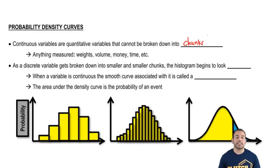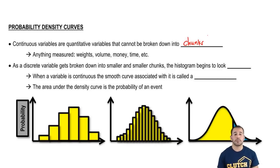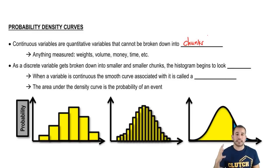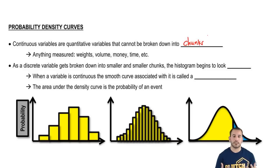Now, continuous random variables — you can't have these smaller discrete chunks, so we have anything that's measured. Weights, for example — even though you may weigh 120 pounds, if you want to get very exact, you could be weighing 120.2795 pounds. Same thing with volume, ounces, money, time — anything that can be broken down into an infinite amount of discrete chunks within an interval. That's what's considered a continuous random variable.